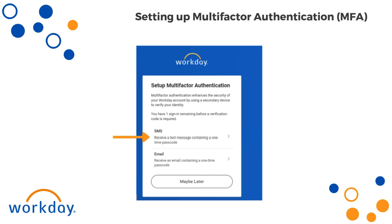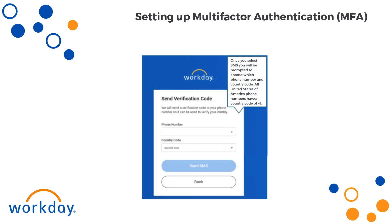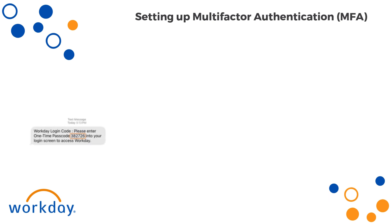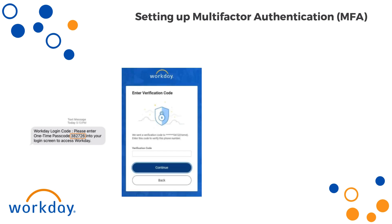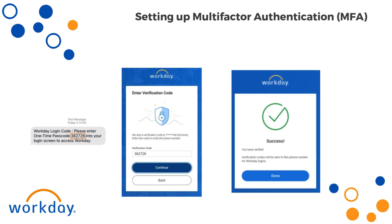Select SMS to set up multi-factor authentication via text message. Once you select SMS, you will be prompted to select your phone number and country code. All United States phone numbers have a country code of plus one. Once your phone number and country code have been selected, click Send SMS. You will receive a verification number sent to the selected phone number. Enter the verification code received via text on the next screen and click Continue. Wait for the confirmation screen and select Done.